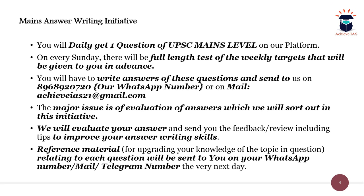One question is given to you daily, a full-length test is taken every Sunday, and weekly targets are given to you in advance. You are required to write the answers to these questions and send them to us on the number 8968920720, or you can also mail your answers to achieveies21@gmail.com.